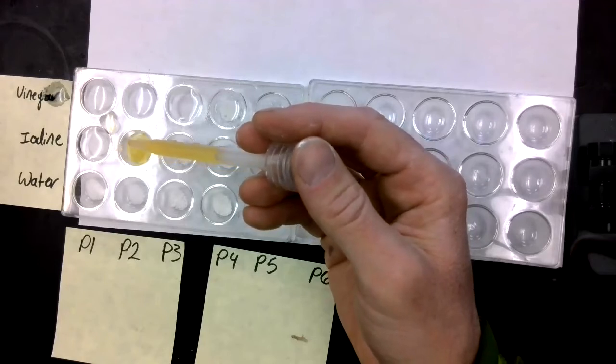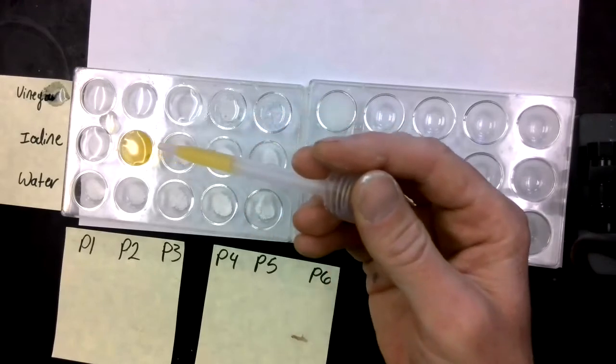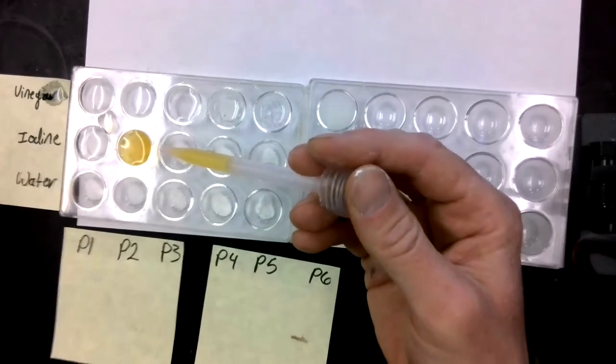All right, what color is it in powder two? That orange, yellow, golden color, right?